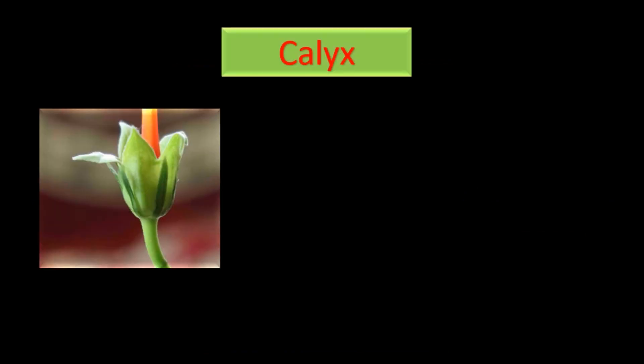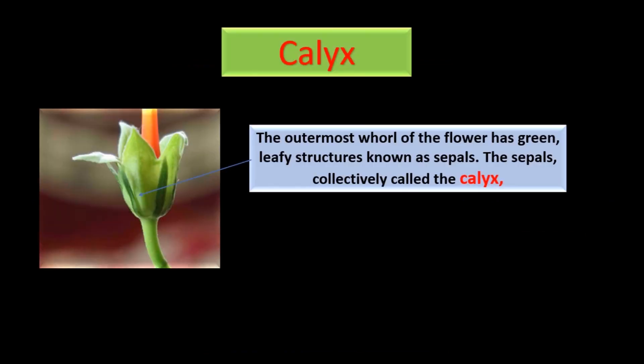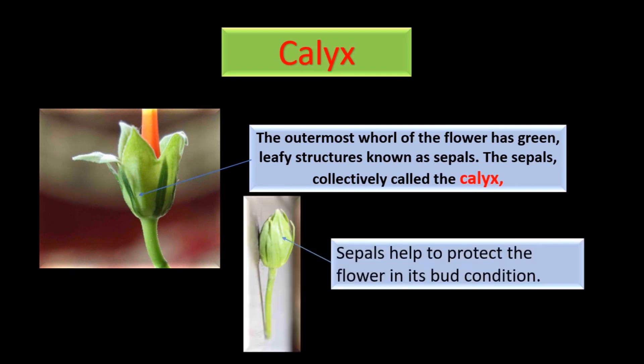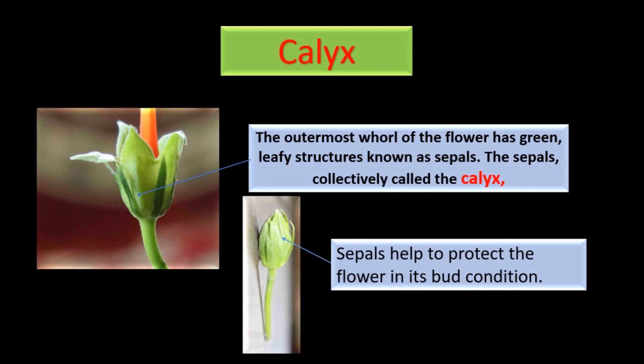The first one is calyx. The outermost wall of the flower has green leafy structures known as sepals. The sepals collectively form the calyx. The function of the sepal is to protect the flower in its bud condition.